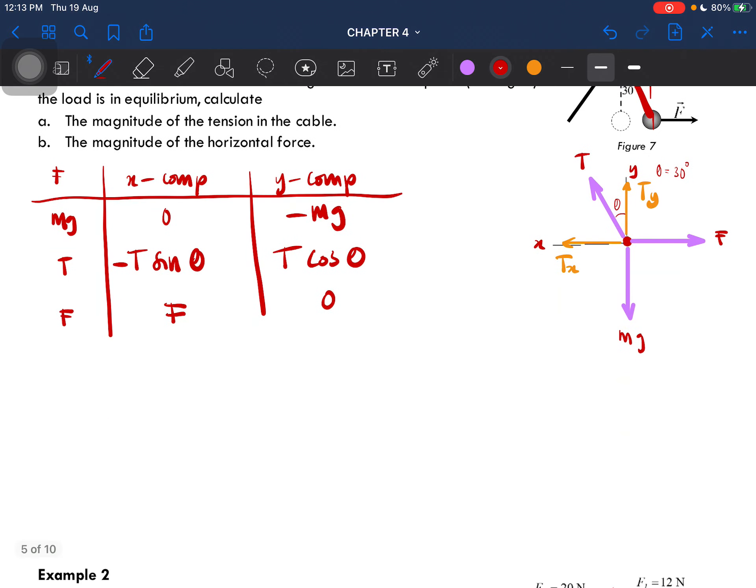Since the load is in equilibrium, we know that the total force should equal zero. So total force at the x component will be equal to negative T sine theta plus F equals zero. From here we know that F is equal to T sine theta. And then we do the y component: negative mg plus T cos theta equals zero, so T cos theta equals mg.